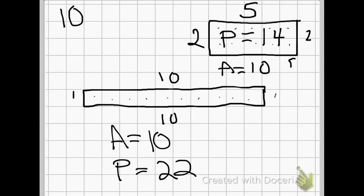So here you have two shapes, same area but different perimeters.